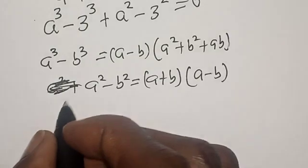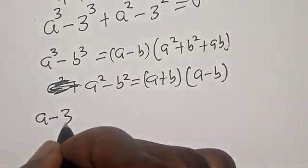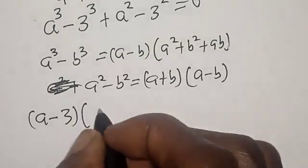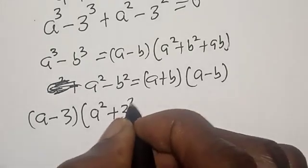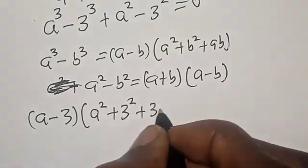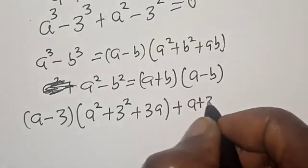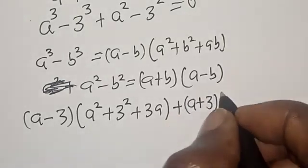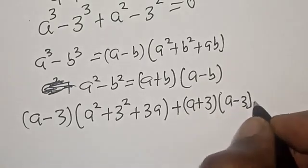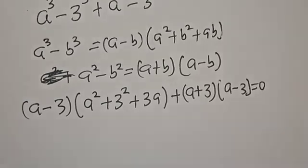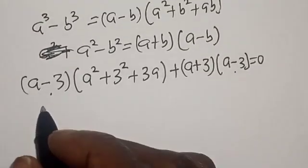Now we have (A minus 3) times (A squared plus 9 plus 3A) plus (A plus 3)(A minus 3) equals 0. We can see that (A minus 3) is a common factor here. Let's factor it out.